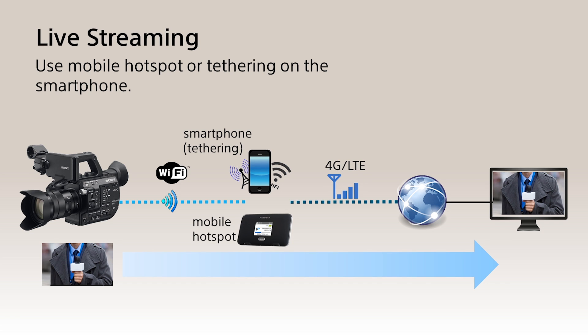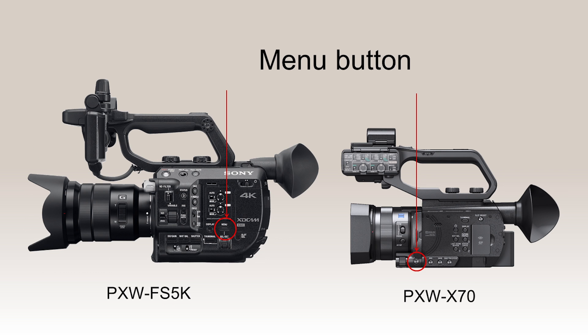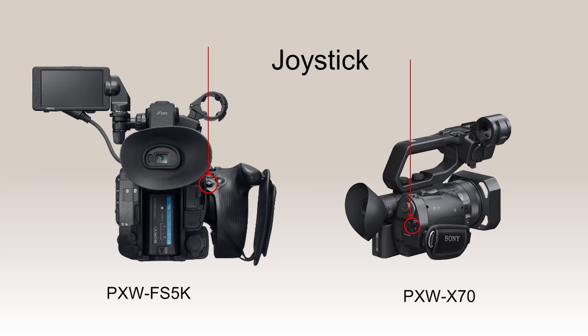Let's start with live streaming configuration. This graphic shows how to set up the network connection to stream live images. The PXW-FS5 can use Wi-Fi to connect with smartphones or mobile hotspots which have 4G LTE service. Press the menu button located on the side of the camera, then use the multi-function scroll wheel on the side of the camera or the joystick at the rear of the camera's handgrip to navigate down to Network Set.